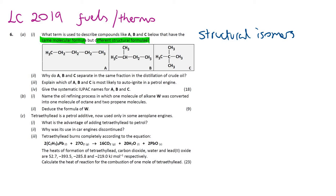Why do A, B and C separate in the same fraction in the distillation of crude oil? When you distill crude oil, you separate out a mixture of compounds based on their boiling point. The boiling point between those molecules will be dependent on the intermolecular force, and with crude oil all those intermolecular forces are van der Waals forces of attraction. They have similar boiling points because they've all got the same number of atoms and are around the same size, so the intermolecular forces will be around about the same. They have the same molecular formulae — especially because they're hydrocarbons.